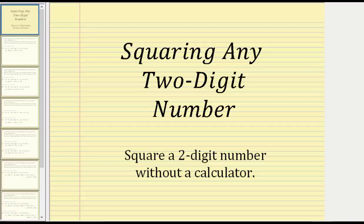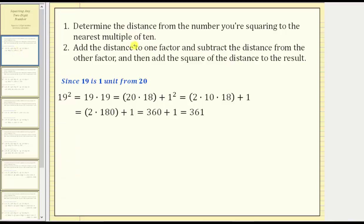Welcome to a video that will show how to square any two-digit number without the use of a calculator. The first step is to determine the distance from the number you are squaring to the nearest multiple of 10. Step two: add the distance to one factor and subtract the distance from the other factor. Then add the square of the distance to the result.